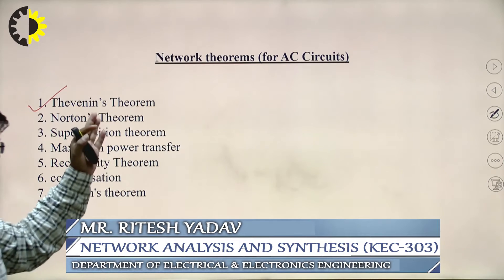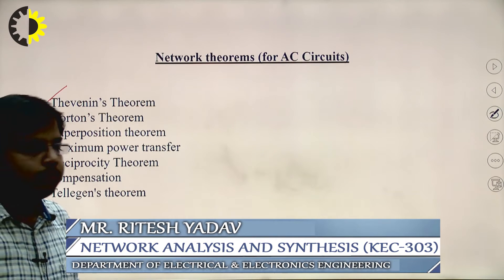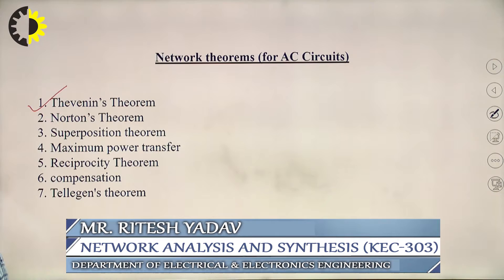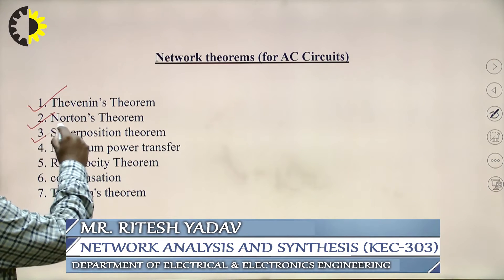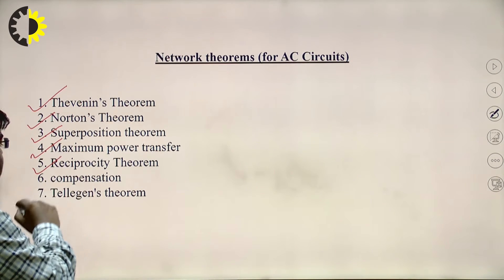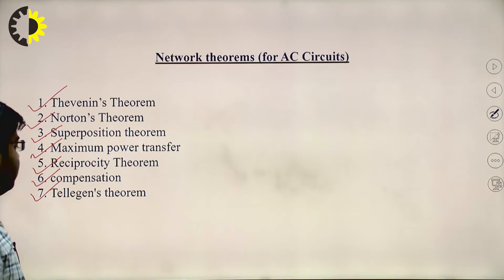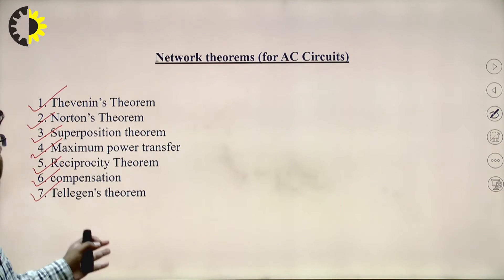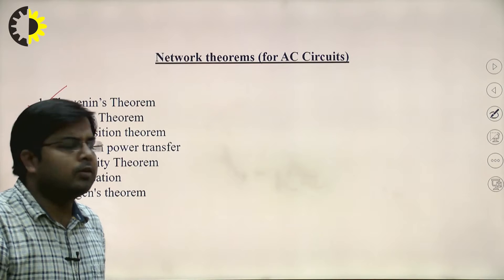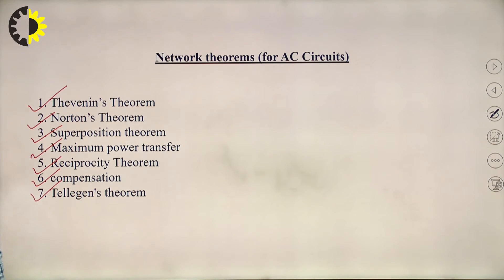These are the topics in unit number 2. You can see Thevenin's theorem, Norton's theorem, superposition theorem, maximum power transfer theorem, reciprocity theorem, compensation theorem, and Tellegen's theorem. These are the theorems for AC networks and the same theorems can be applied to DC networks.